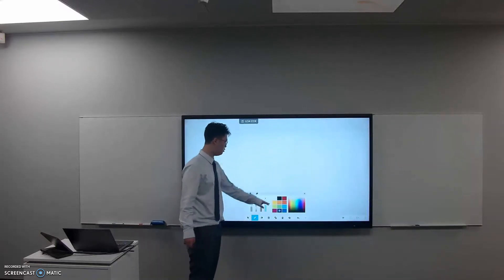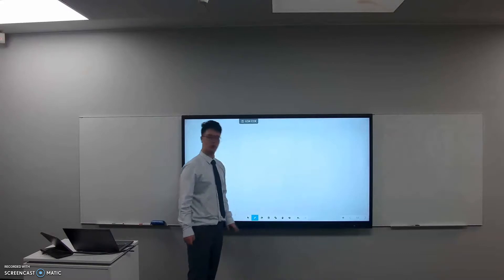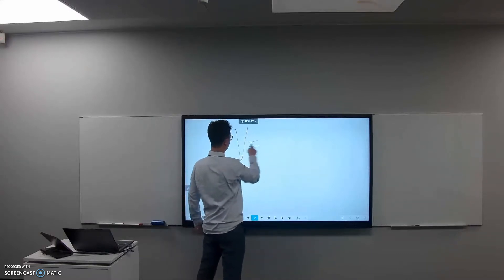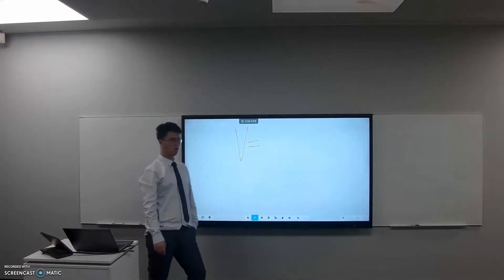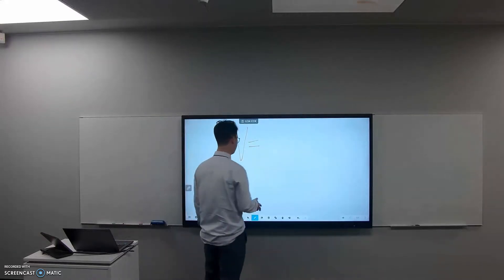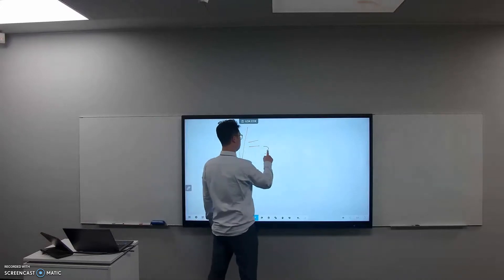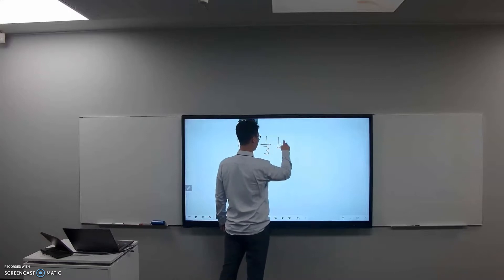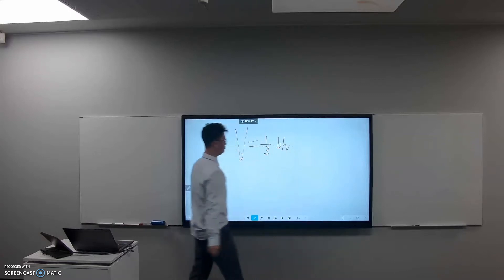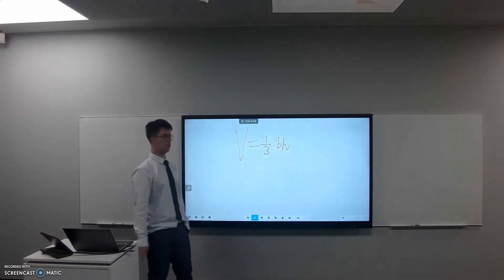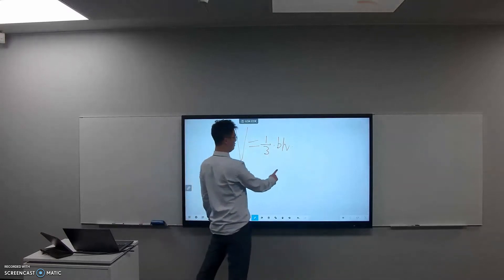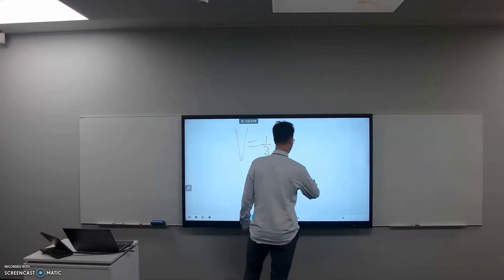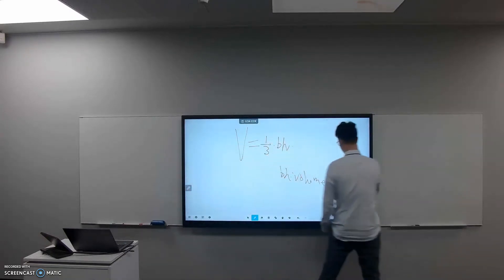So let's come up with the proper equation for the volume of the pyramid. So it's one-third base times height. Your base times height is the volume of the prism.